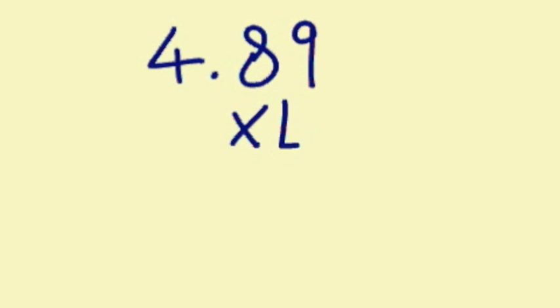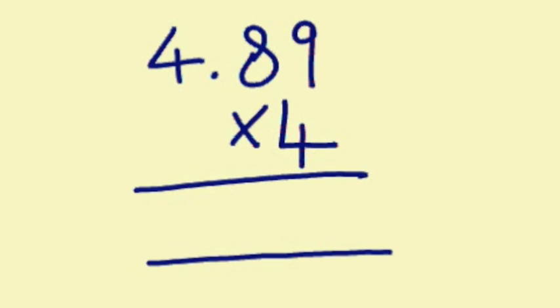So Jack, can you take us through one please? Right, so as an example we're going to take 4.89, and we're going to multiply that by 4, and I want to set it out just like we would a normal multiplication. The first sum we have to do is 4 by 9, which we know is 36, and we write as such.